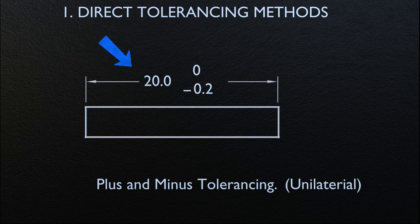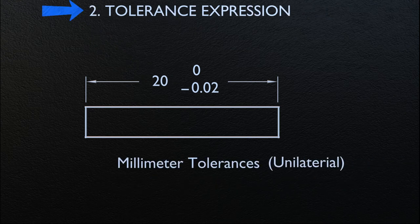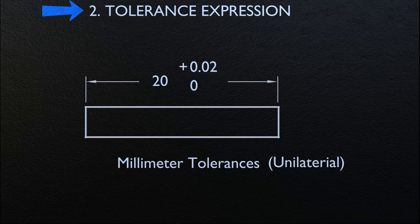Here we are going to look at two examples with positive and negative tolerance, as seen on the screen. Where millimeter dimensions are used on drawings, unilateral tolerancing is used, and either the plus or minus value is nil — a single zero is shown without a plus or minus sign. In this example, the value of 20 is the nominal size.